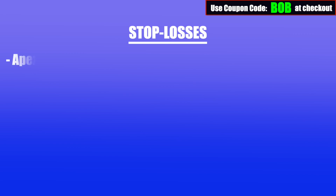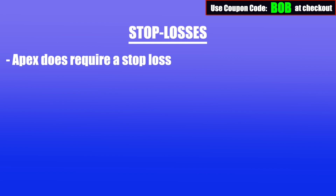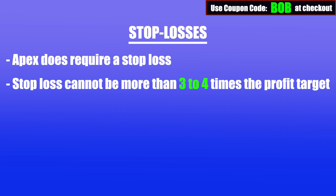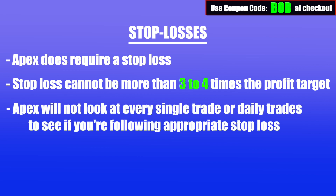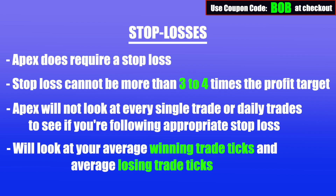Let's move on to how Apex regulates stop losses. Apex does require a stop loss, whether it's an actual digital one placed in your trading software or a mental stop loss you track yourself. The stop loss cannot be more than three to four times the potential profit target — so you can risk at most $800 to make $200, or risk at most $1,600 to make $400. The rule isn't entirely black and white as there are exceptions, but Apex already allows such a high risk-to-reward that any more would risk triggering your drawdown. They'll look at the average ticks of your winning trades versus your losing trades, and if your losing trade ticks are more than three to four times your winning trade ticks, that might be an issue. They review this when you make your withdrawal request.